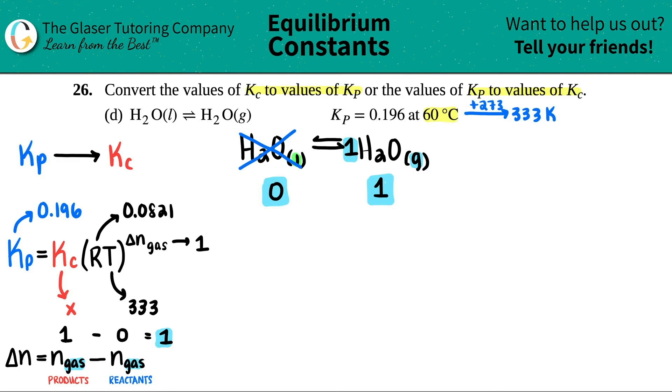Now we have everything. Let's actually do the math. So 0.196 equals the Kc, which we said was X. And then we have R times T. So 0.0821 times 333. And that's all raised to the first power. And remember, anything that you raise to the first is the same. So technically, I don't even have to do this. Whatever this number is, that's what it's going to be after you raise it to the first.